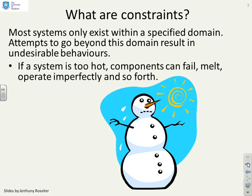A simple example as you can see with this snowman. If a system is too hot then the components can fail, they can melt, they can operate imperfectly and so on. Clearly you need a constraint that the temperatures stay within certain bounds.